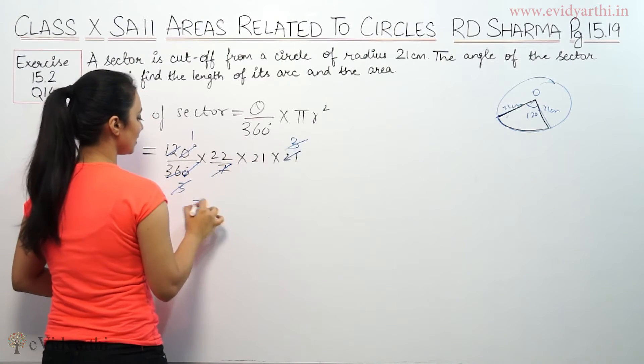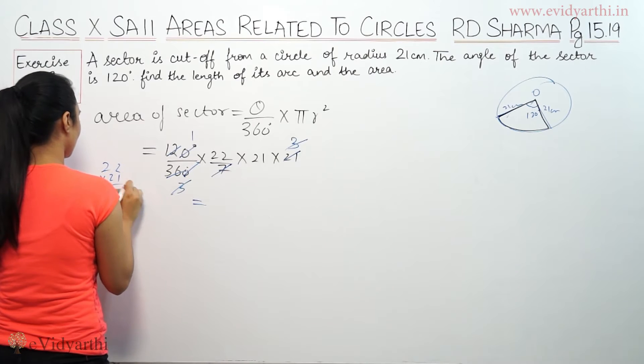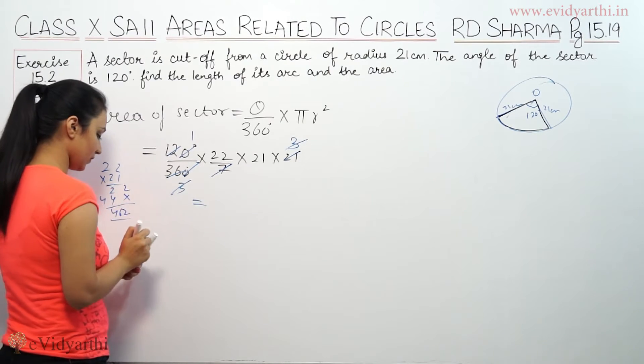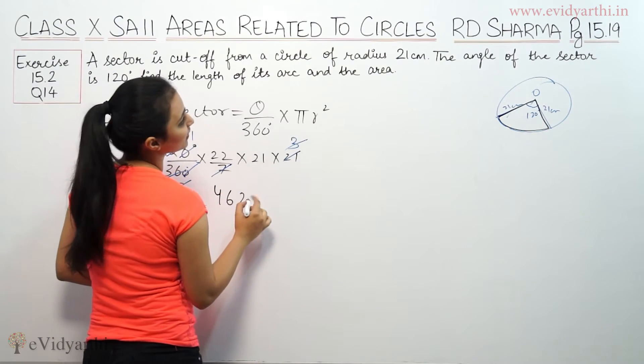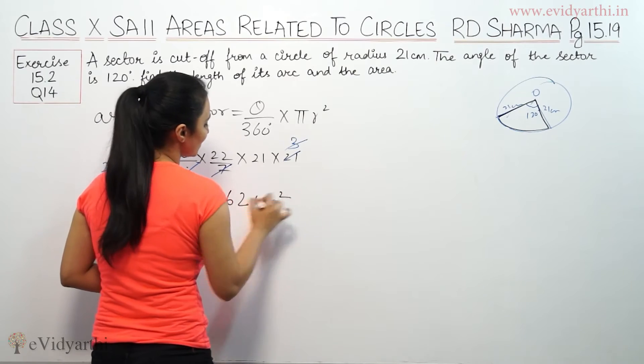This is 462. So area of sector is 462 centimeters squared.